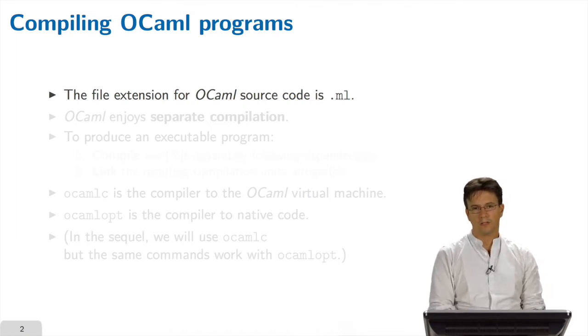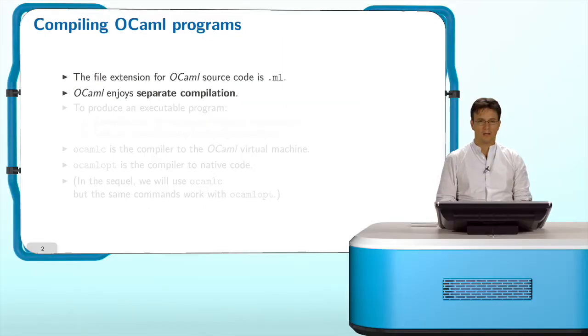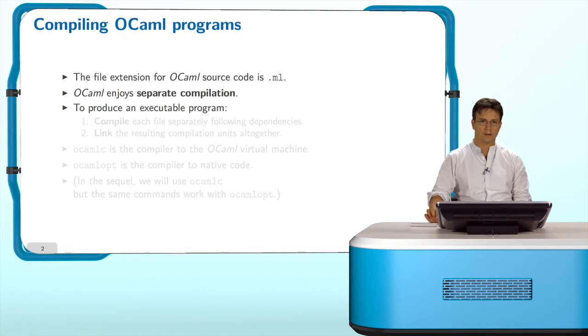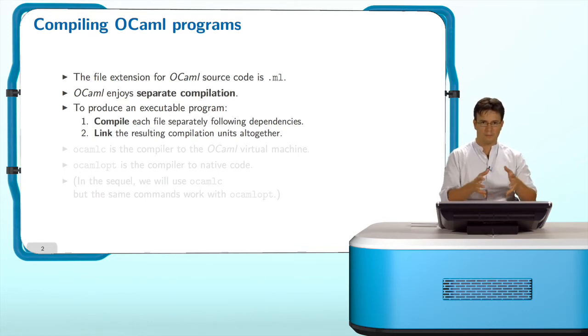The first thing to know is that the extension of the filename of an OCaml source code is .ml. The OCaml language enjoys the separate compilation property, which means we can produce an executable program by first compiling each file separately following the dependencies. When you have all the compiled units, you can put them together, link them together to produce an executable program.